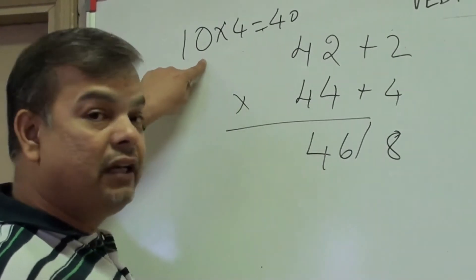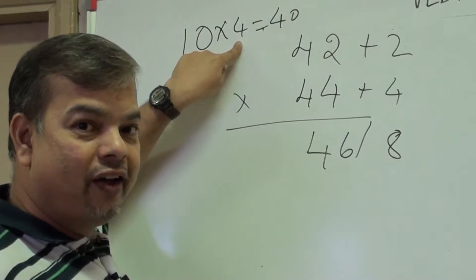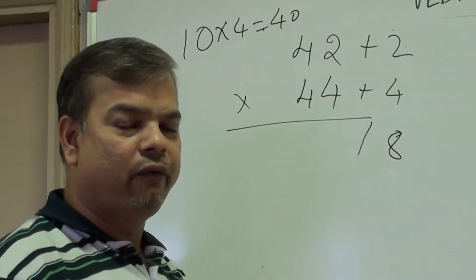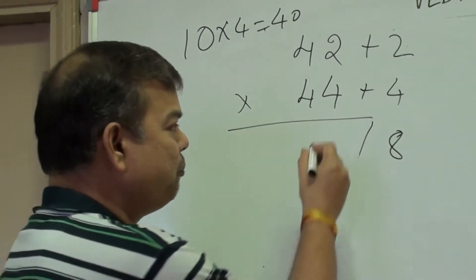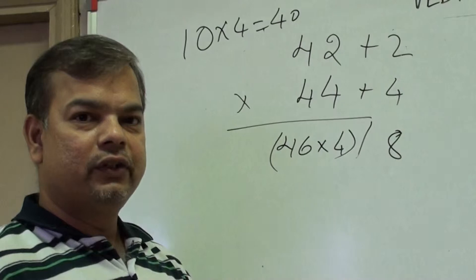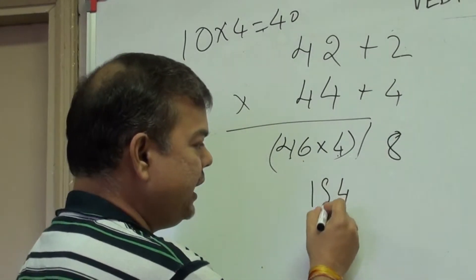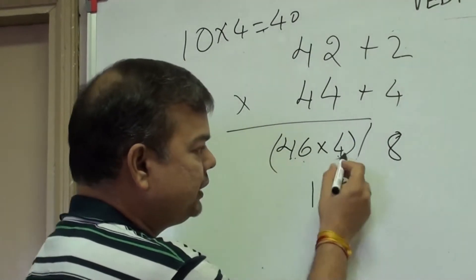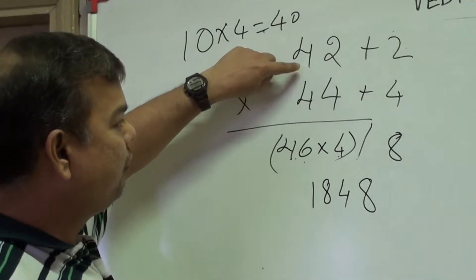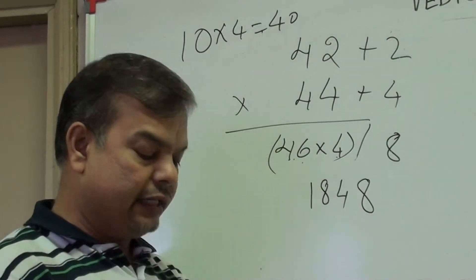In the original case we changed the base from 10 to 40 by multiplying by 4. So once you get 46, you cannot write 46 directly — you have to multiply 46 by 4. That gives: 6 × 4 = 24, write 4 carry 2; 4 × 4 = 16 + 2 = 18. So instead of 46 you write 184, and with the 8, your answer for 42 × 44 is 1848.